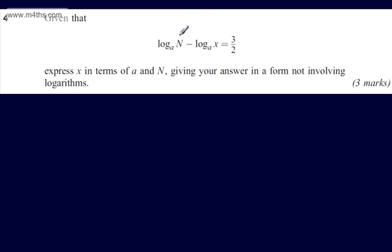Let's start on the left-hand side of the equation. We can use the log law: log a minus log b is equal to log of a over b. So if we have a difference, it becomes a quotient. So on the left-hand side, I can write this now as log to the base a of N divided by x. So N over x is equal to 3 over 2.